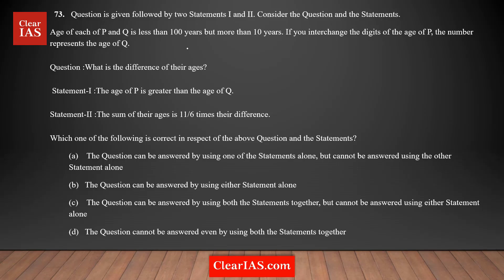Let's do question number 73. This is a value-based data sufficiency question. It's given that the age of each of P and Q is less than 100 but more than 10 years, meaning each age is a two-digit number. If you interchange the digits of the age of P, the number represents the age of Q.